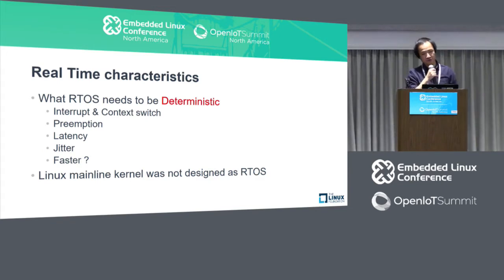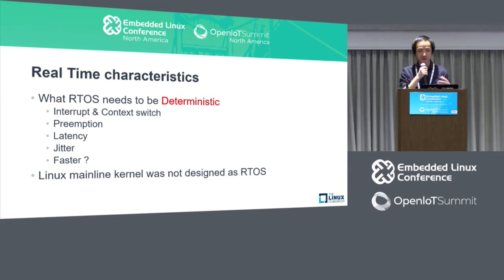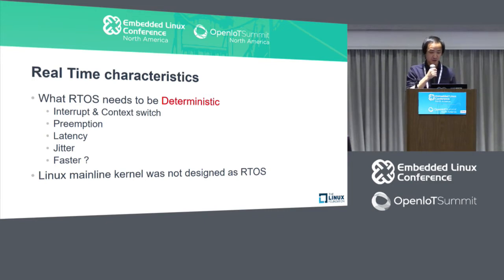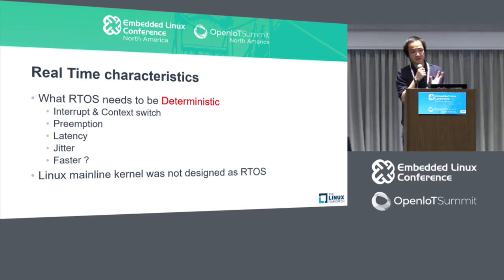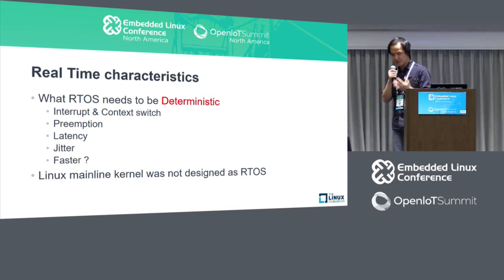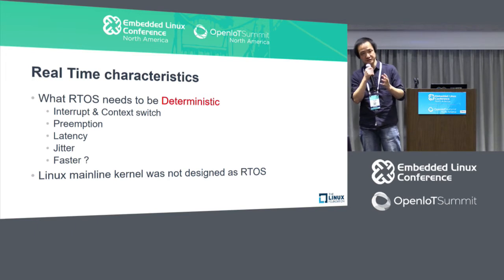Now let's look at real-time. What is real-time? One good way to understand this is to look at existing RTOS real-time operating systems and what features they provide. You can find common keywords: interrupt, context switch, preemption, latency, and jitter — the variation. And maybe they say 'faster.' When people talk about real-time systems, there's a common misconception: that reacting in milliseconds or less makes an operating system real-time, but taking minutes does not. But that's not true.